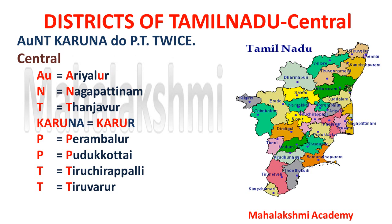Twice means once in the morning and once in the evening. So this short code will help you learn the central districts. AU stands for Ariyalur, N stands for Nagapattinam, T stands for Thanjavur, Karuna stands for Karur, and PT — since it is twice — means we repeat two P's and two T's.